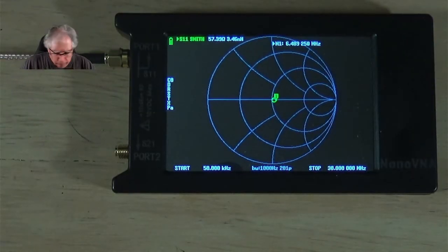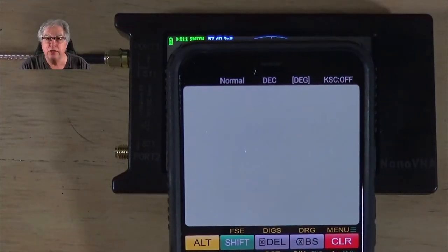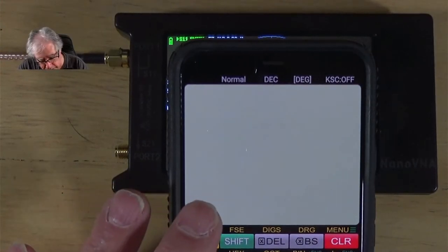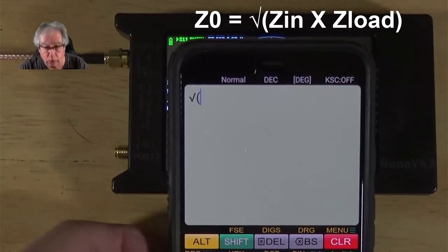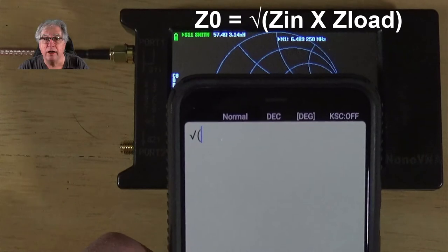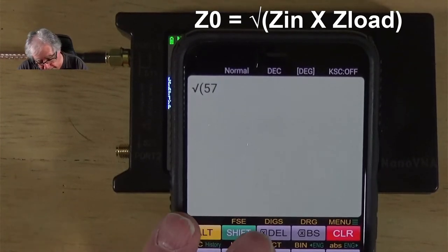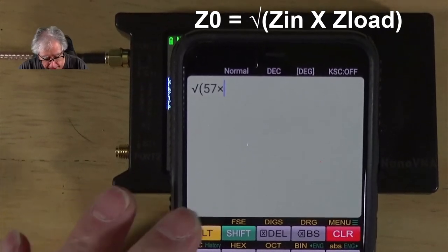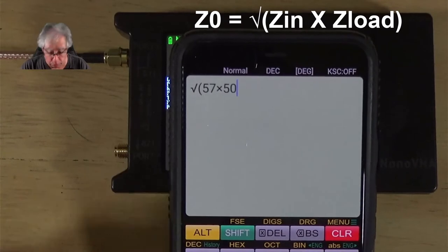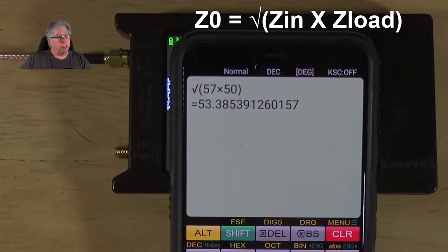Now, we're going to do a little math. The formula we're going to use is the square root of the impedance we read, which was, we decided on 57. We could use 57.5, but let's just round it to a whole number. And we're going to multiply that by the load that we have on the end of the coax, which is a 50 ohm load. And we're going to hit enter.